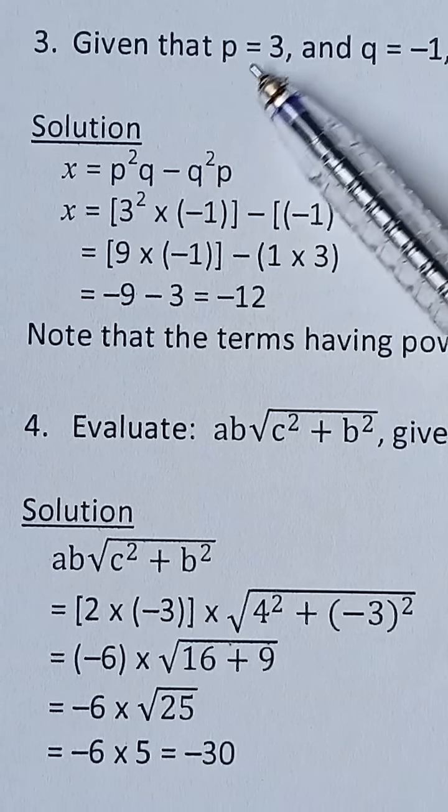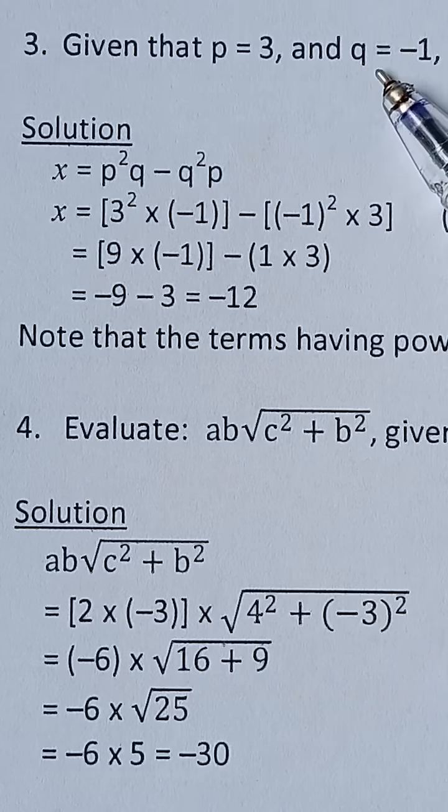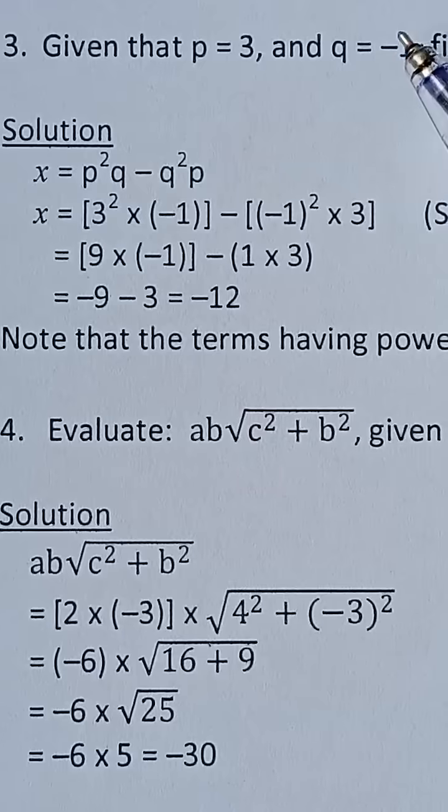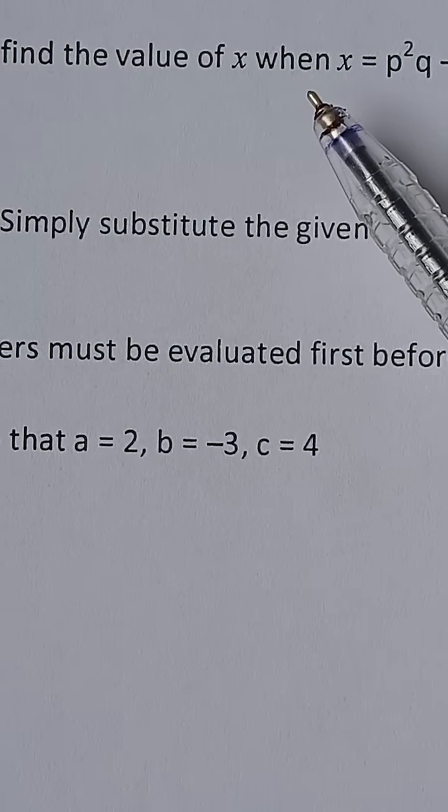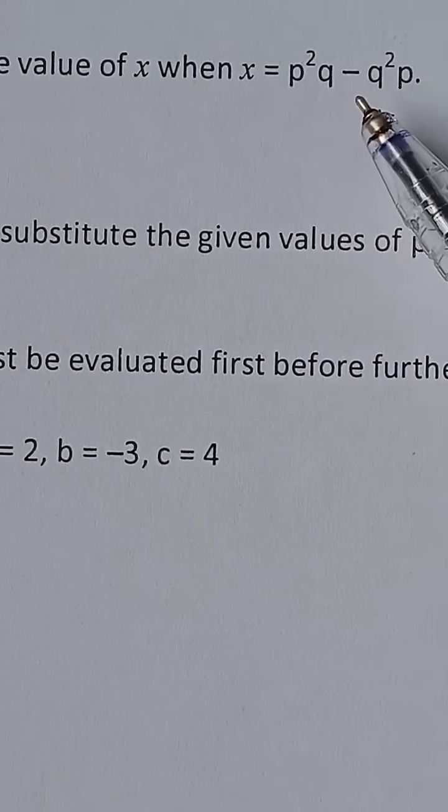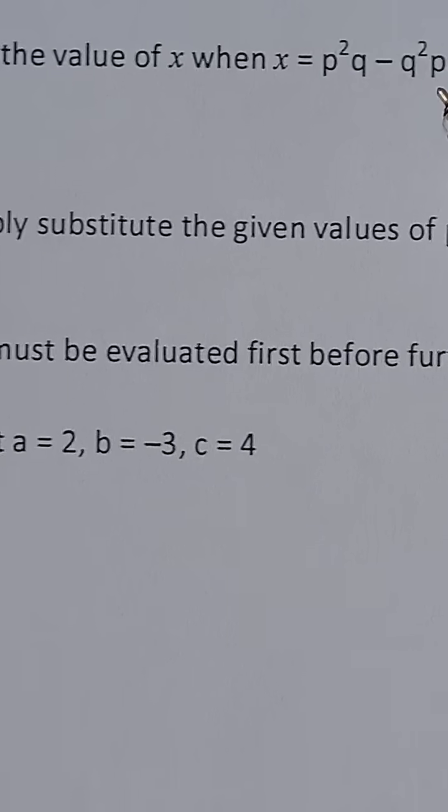Given that p is equal to 3 and q is equal to negative 1, find the value of x when x equals p squared q minus q squared p.